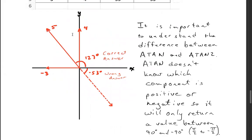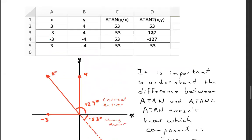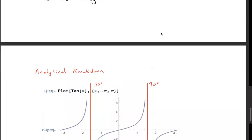So if this were the correct answer for minus 3 and 4, if you just use ATAN you're going to get minus 53 degrees and that's wrong. Whereas if you use ATAN2, you'll see that you get 127 degrees.